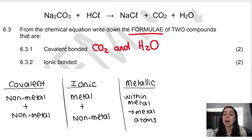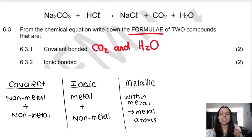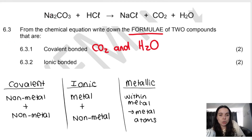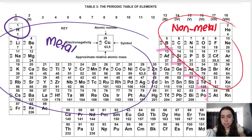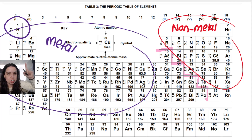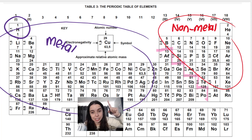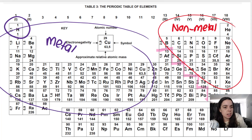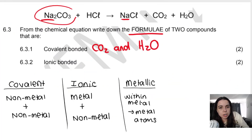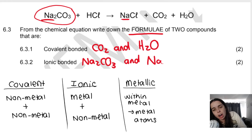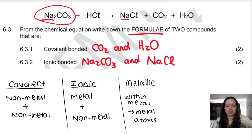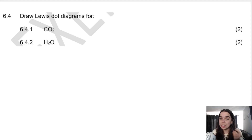For ionic bonded compounds, remember ionic bonds contain a bond between a metal and a non-metal. The easiest way is to identify which element in the equation is a metal. Sodium is a metal — it's a group one alkali metal on the periodic table. So sodium carbonate, Na2CO3, and sodium chloride, NaCl, are your ionic bonded compounds. Question 6.4 now wants me to draw Lewis dot diagrams.